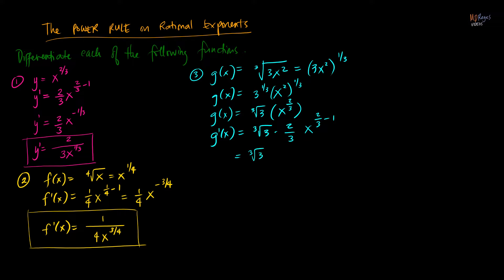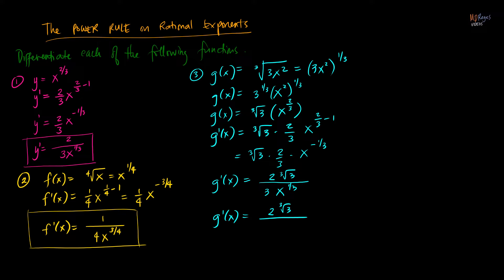Applying the power rule, we get cube root of three times two-thirds times x raised to negative one-third. Simplifying without a negative exponent, the numerator contains two cube root of three and the denominator contains three x raised to positive one-third. Be consistent: if the function is written as a radical, write your final answer in radical form too. So g prime of x equals two cube root of three over three cube root of x.